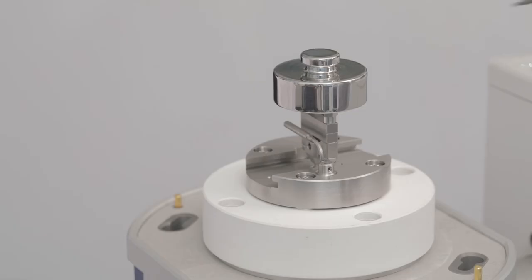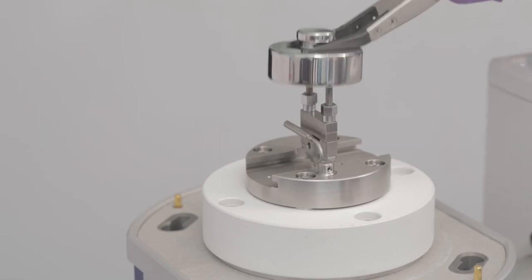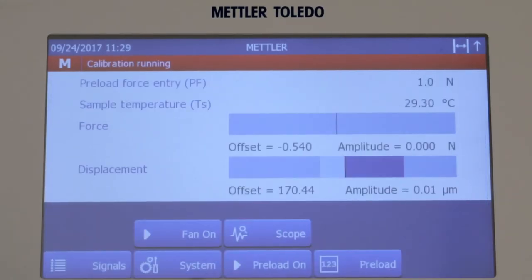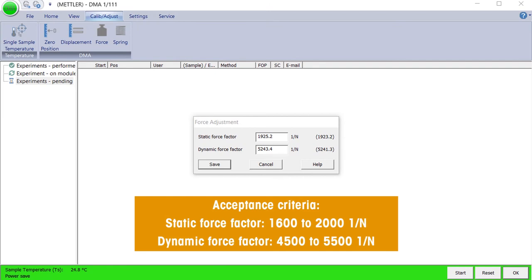Remove the reference mass and press OK. If the calculated static and dynamic force factors are within the tolerance limits, click Save to adjust the instrument.